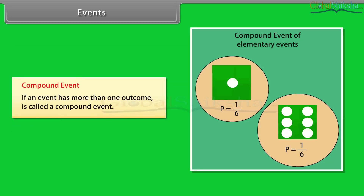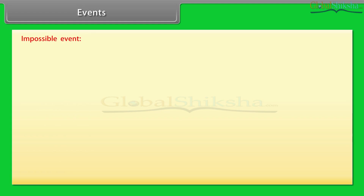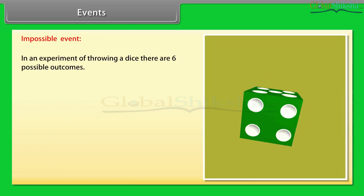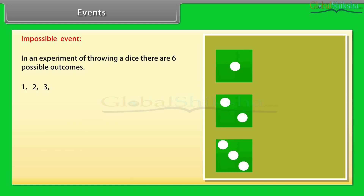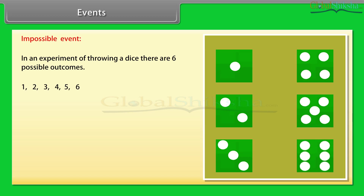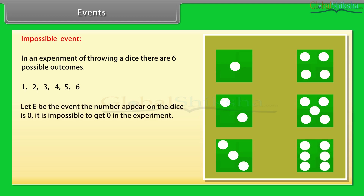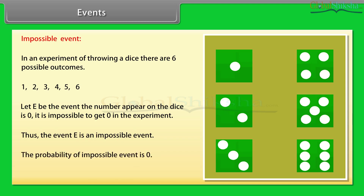Compound event: an event that has more than one outcome is called a compound event. Impossible event: to understand it, let's take an example. In an experiment of throwing a dice, there are six possible outcomes: 1, 2, 3, 4, 5, 6. Let E be the event that the number appearing on the dice is zero. It is impossible to get zero in the experiment. Thus, the event E is an impossible event. The probability of an impossible event is zero.